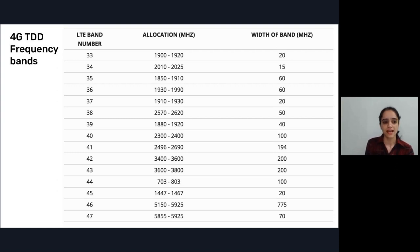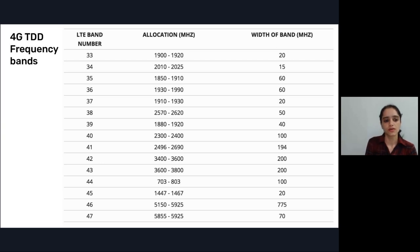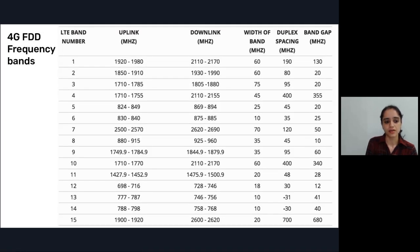Looking at the LTE band numbers, TDD bands such as band 33 have a single allocation — for example 1900 to 1920 MHz with a 20 MHz width. In FDD bands we have separate allocations for uplink and downlink. For example band 1 has uplink 1920 to 1980 MHz and downlink 2110 to 2170 MHz with a specific duplex spacing.